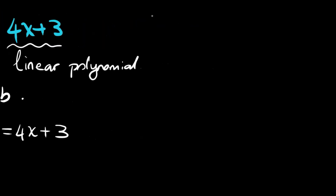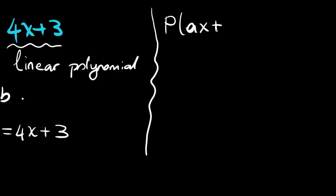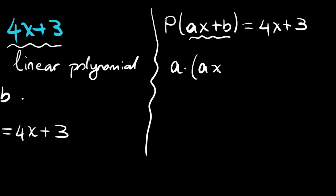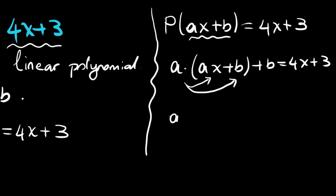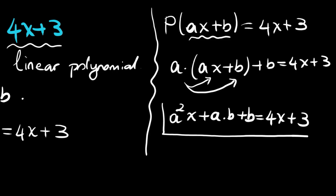From this, again using the rule of P(X), since the rule for P(X) is AX + B, that works on this one again. So we have A times (AX + B) plus B = 4X + 3. From that we can distribute A and write A²X + AB + B = 4X + 3.